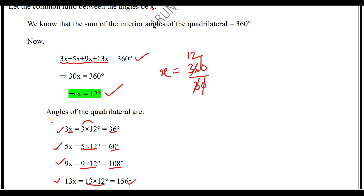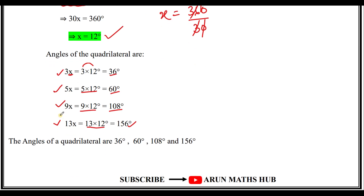Therefore the angles of the quadrilateral are: 3·12 = 36 degrees, 5·12 = 60 degrees, 9·12 = 108 degrees, and 13·12 = 156 degrees. Students, do download this worksheet and solve it.